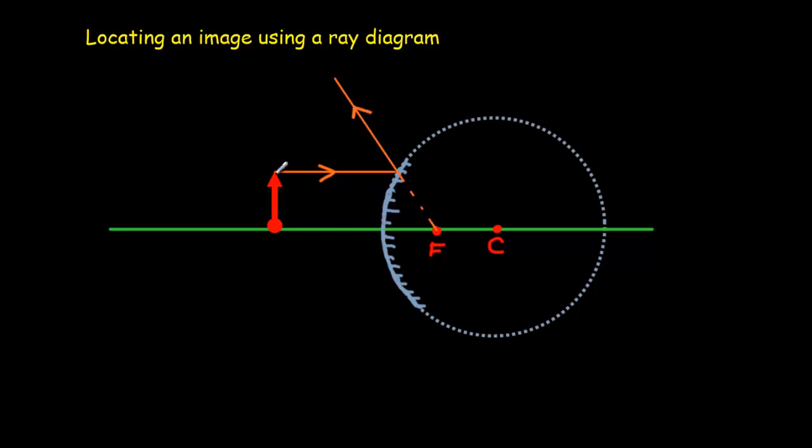Now I could either use my rule through C or my other rule through F. I only need two rays, I don't have to do all three. I'm going to choose to direct my ray at F rather than C. So let's come in and I want to go straight towards F.